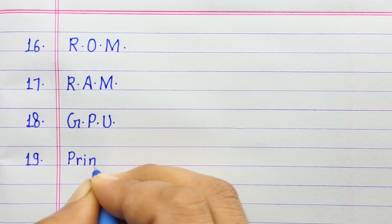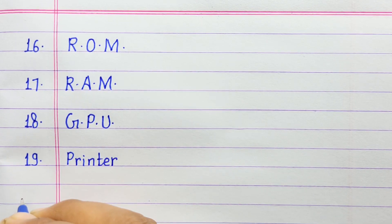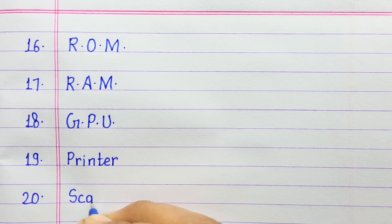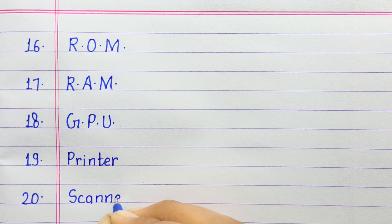Number nineteen: printer. Number twenty: scanner.